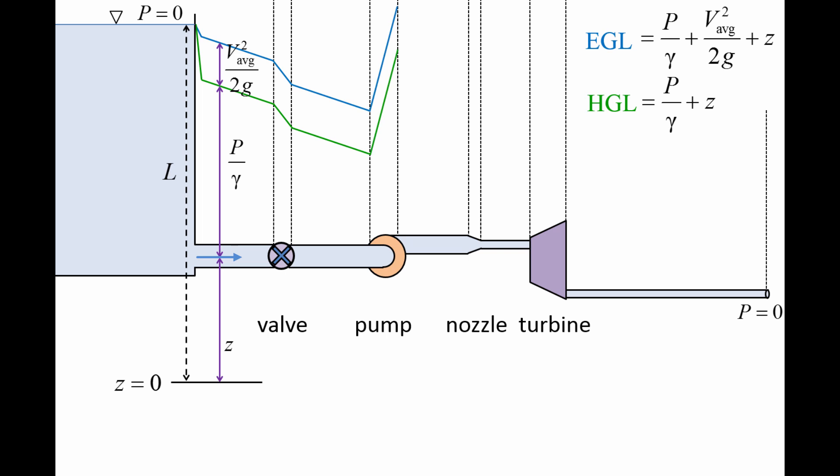Pumps boost mechanical energy, primarily through an increase in pressure, and so both the EGL and HGL curves rise sharply at the pump.